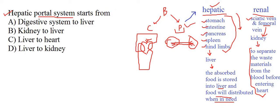So the answer to the first question should be clear. The Hepatic Portal System starts from the digestive system to the liver. The digestive system includes the stomach, intestine, pancreas, and spleen. That option is the right answer.